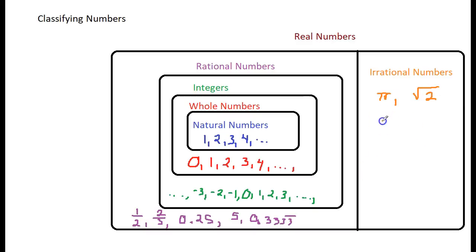Another example of irrational numbers is the square root of any prime number — like the square root of two or the square root of three. These are all irrational numbers. Now, all of these categories are under the umbrella of real numbers. So there we have it — the classification of real numbers. Enjoy working with these and keep it real!